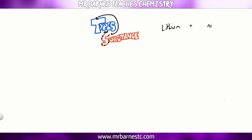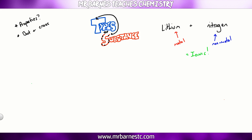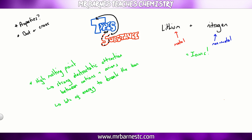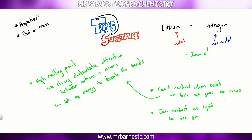We're going to start with lithium reacting with nitrogen. The first step is to identify what type of elements we have. Lithium is a metal, nitrogen is a non-metal, therefore it must be ionic — it's the only bonding type that contains both a metal and a non-metal. So straight away we can say it has a high melting point, because of the strong electrostatic attraction between cations and anions, and lots of energy is needed to break the bonds. It doesn't conduct when solid because the ions can't move, but it can conduct when molten because the ions are free to move.